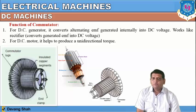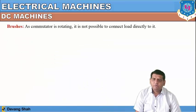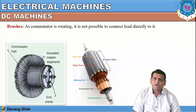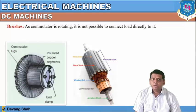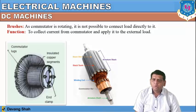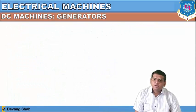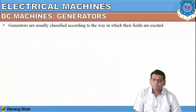At the ends of the commutator, brushes are connected. Since the commutator is rotating, it is not possible to connect a load directly to it. To collect the current from the commutator and apply it to the external load, we require brushes. The brushes wear with time and hence need to be replaced occasionally — it is a maintenance part. These are all the different parts of DC machines.